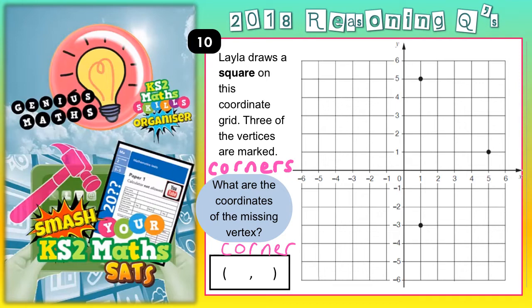So the first thing we need to do is identify where that missing corner would be. To get from this corner down to this corner, you go diagonally across one, two, three, four squares. And then same again, one, two, three, four squares. So it looks like each side of our square is going to be four diagonal squares long. So we might as well just do the same and identify where that missing corner is: one, two, three, four. So it looks like our missing corner is there.